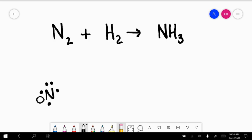So it actually has three open spots that it needs to either share or gain electrons to be happy. This is a covalent compound. So when nitrogen forms a compound with hydrogen, they're both nonmetals, so they share electrons.